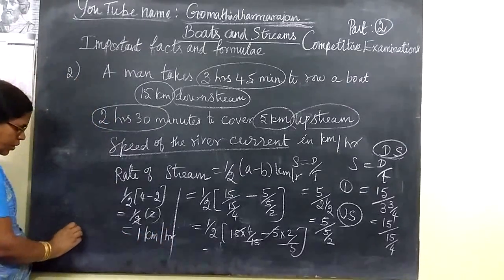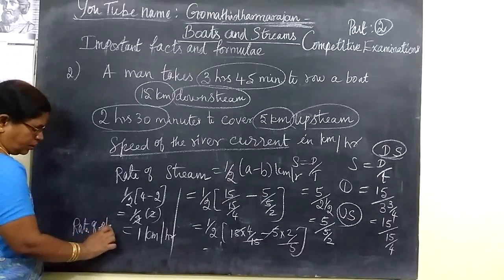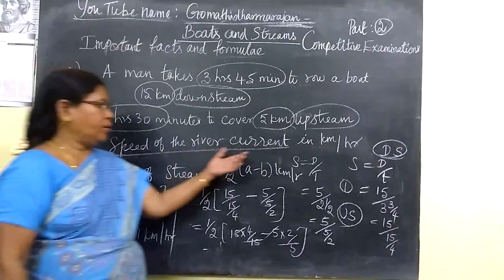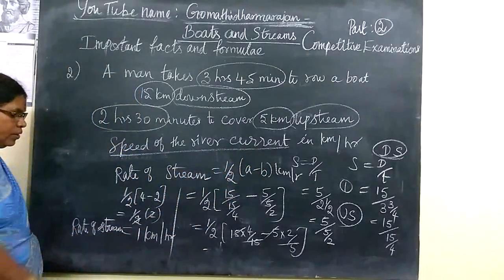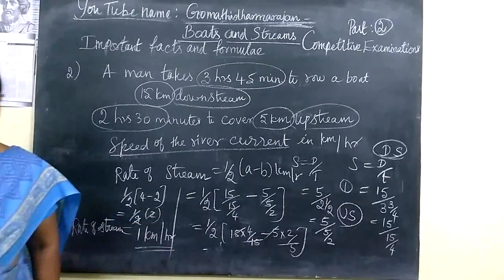So this one is rate, rate of stream. That is the speed of the river current. That means you are finding the rate of stream and that one is 1 kilometer per hour. Thank you.